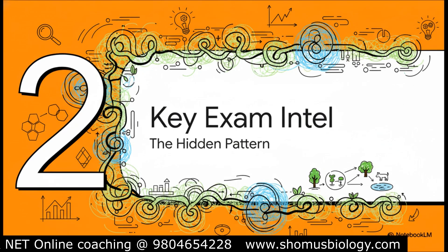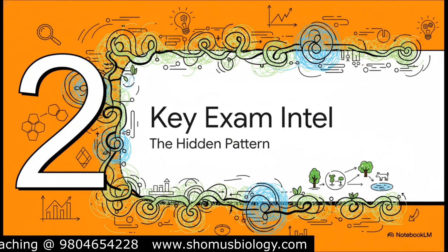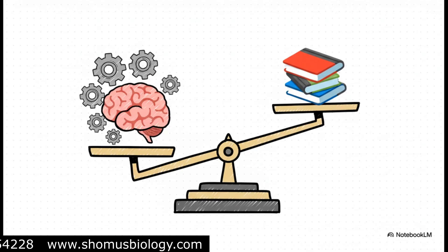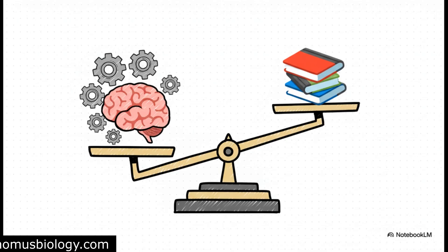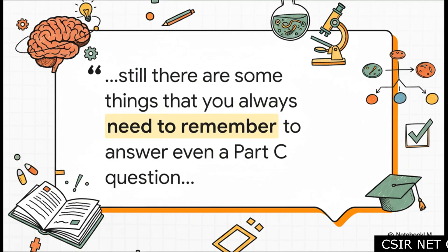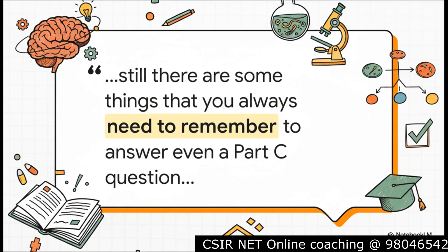We've moved from the 'what to study' to the 'how.' Here's a really key piece of exam intelligence — a hidden pattern in how they actually design the questions for Unit 10. Here is the big twist that might change your entire prep strategy: you'd think ecology is all about analytical skills, and it is, but that's only half the picture. The hidden pattern is the shocking amount of weight given to pure memory-based knowledge. Even in the super complex Part C questions, your success can literally depend on whether you memorized some specific facts. You can understand a concept like succession perfectly, but you still need to have memorized specific facts, names, or lists to actually get the marks. So the big takeaway: do not neglect your memory work, not even for the most analytical parts of the unit.